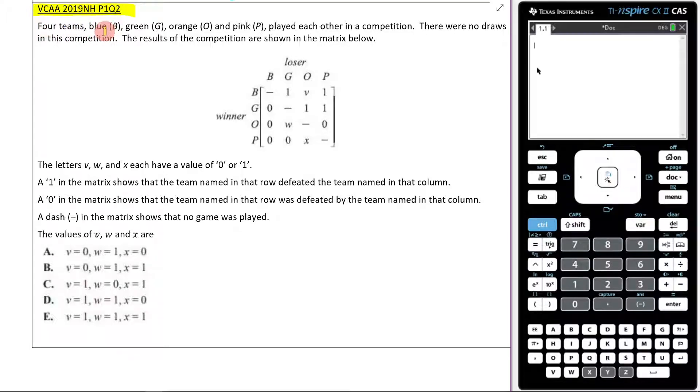Four teams, blue, green, orange and pink, played each other in a competition. There are no draws. In this competition, the results of the competition are shown in the matrix below. Here it is.